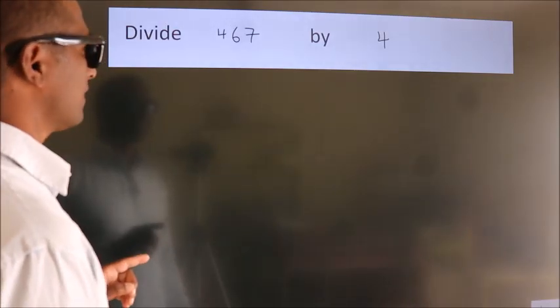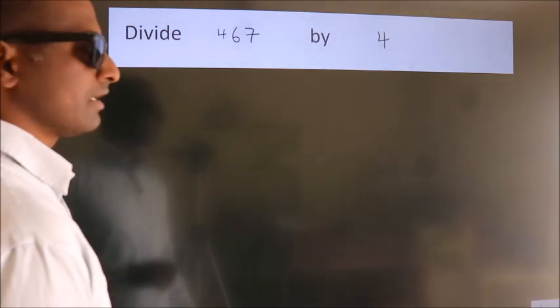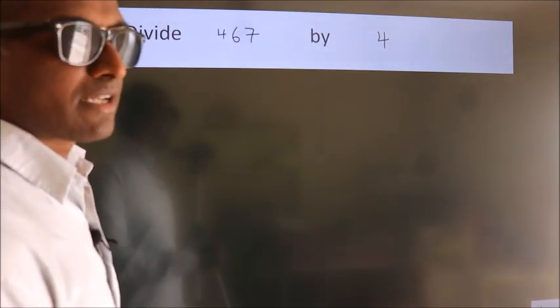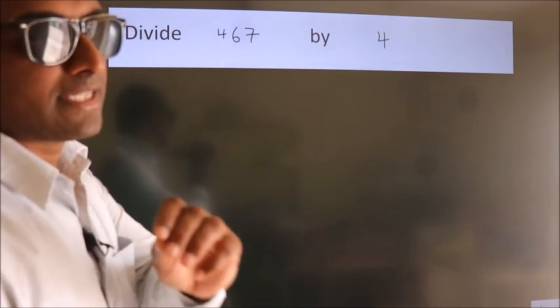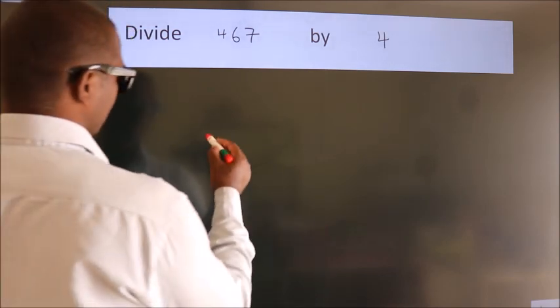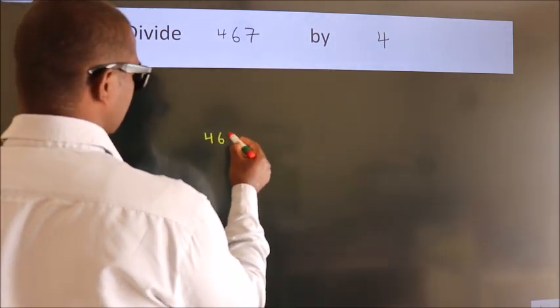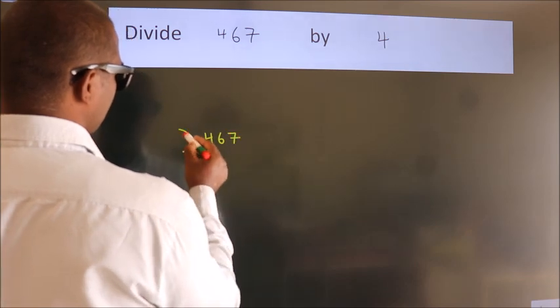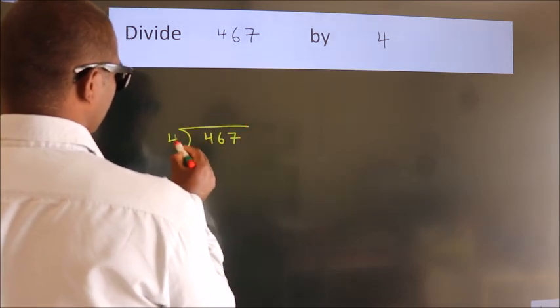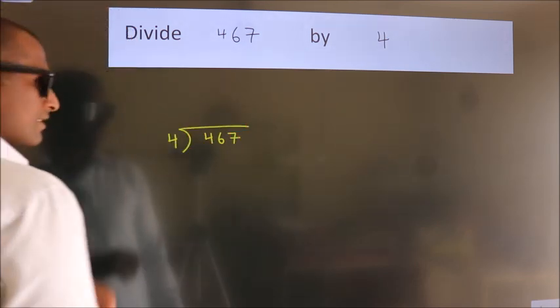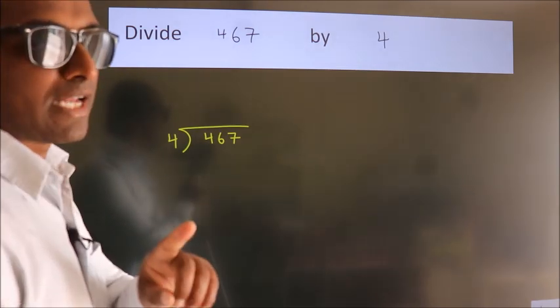Divide 467 by 4. To do this division, we should frame it in this way. 467 here, 4 here. This is your step 1.